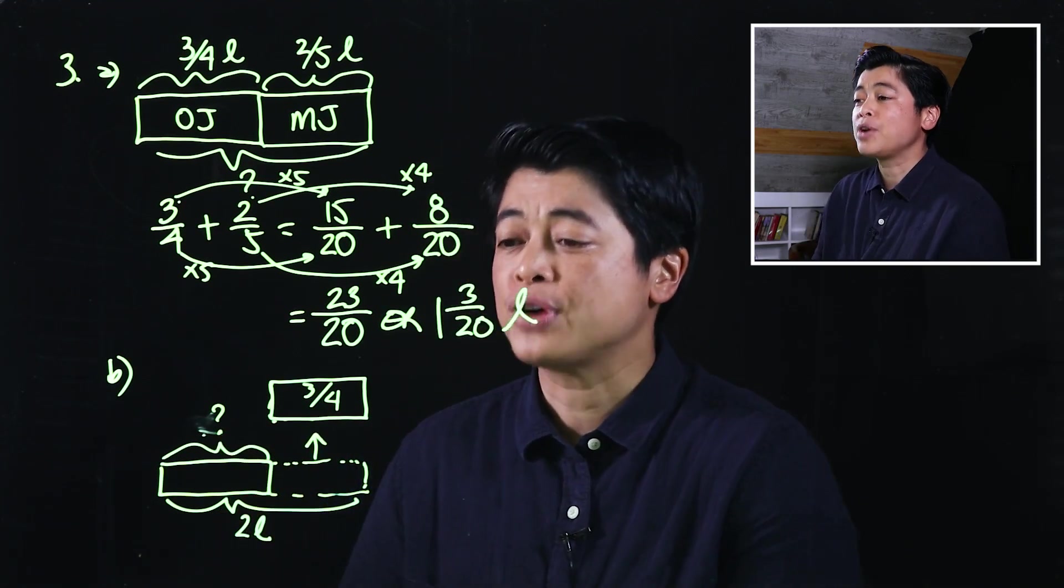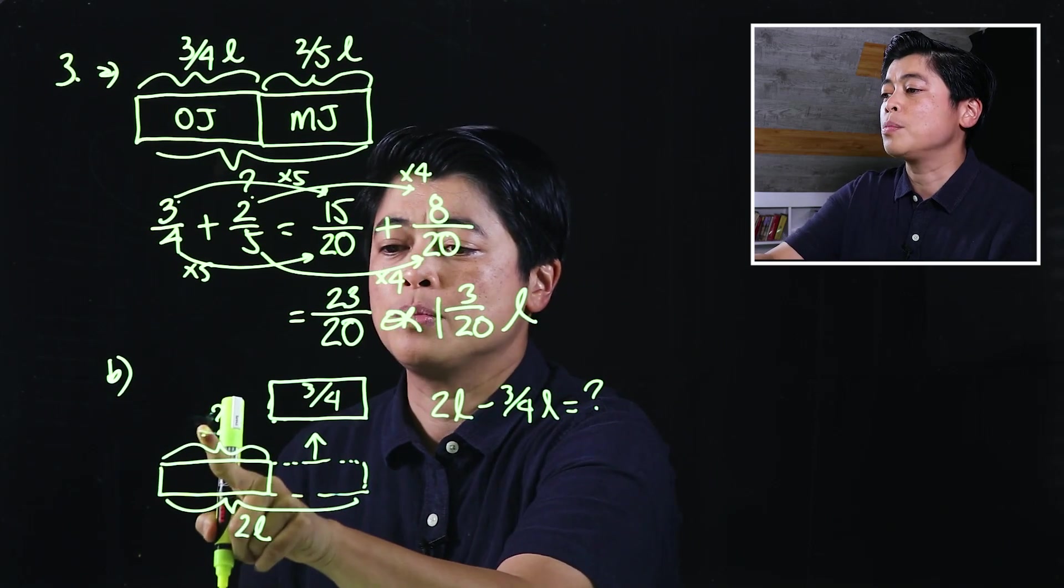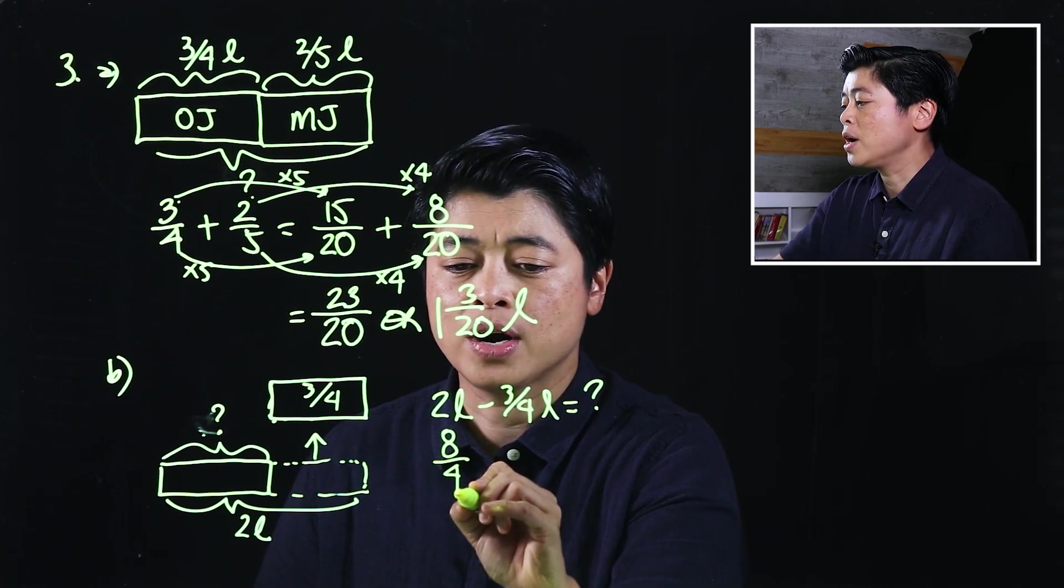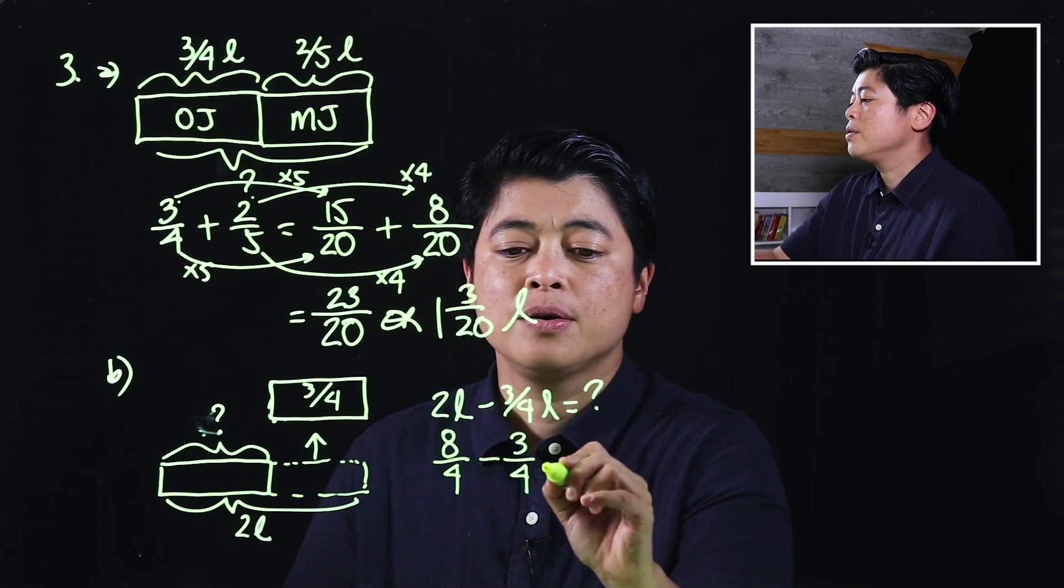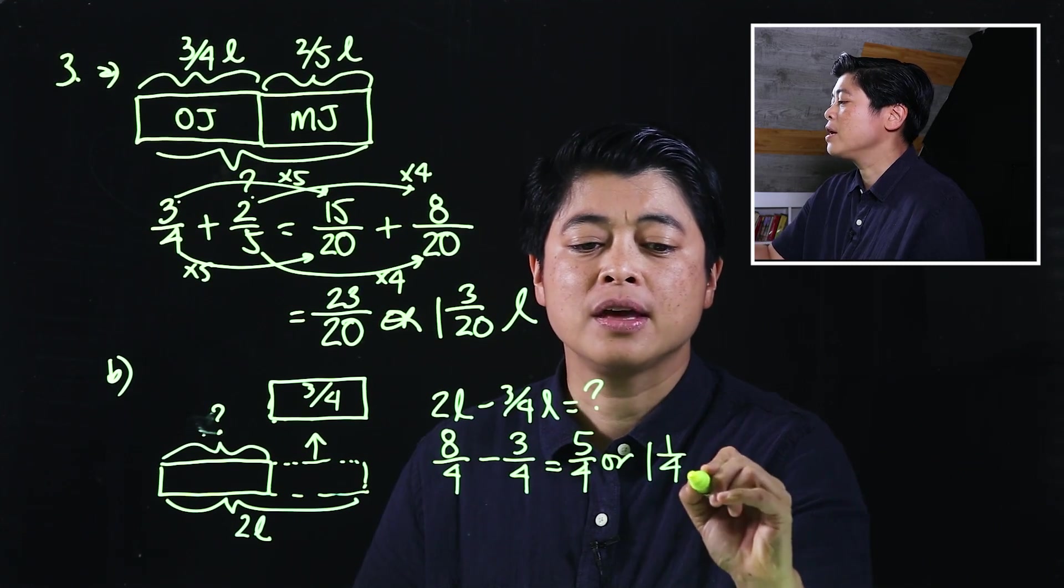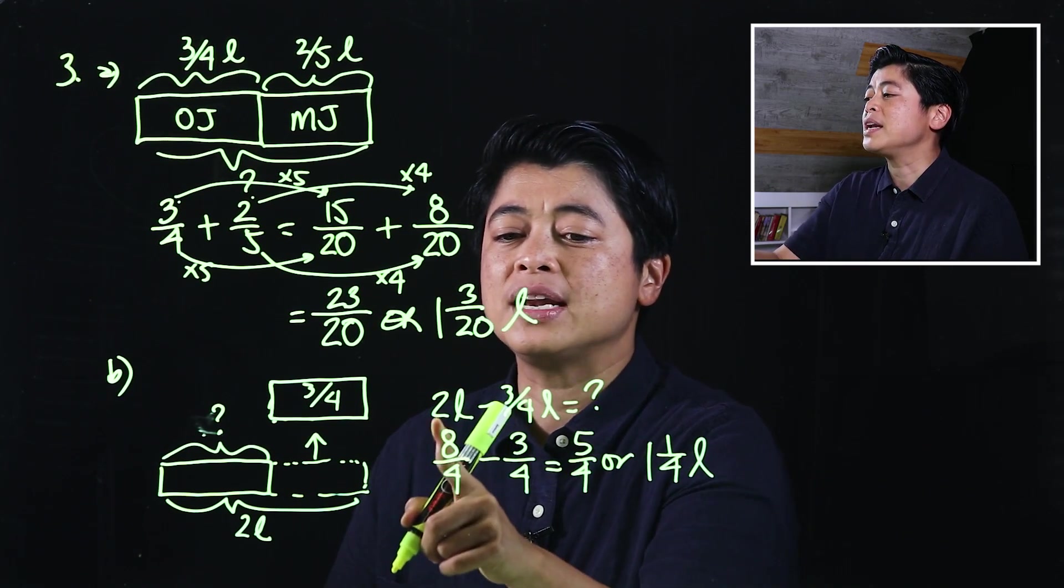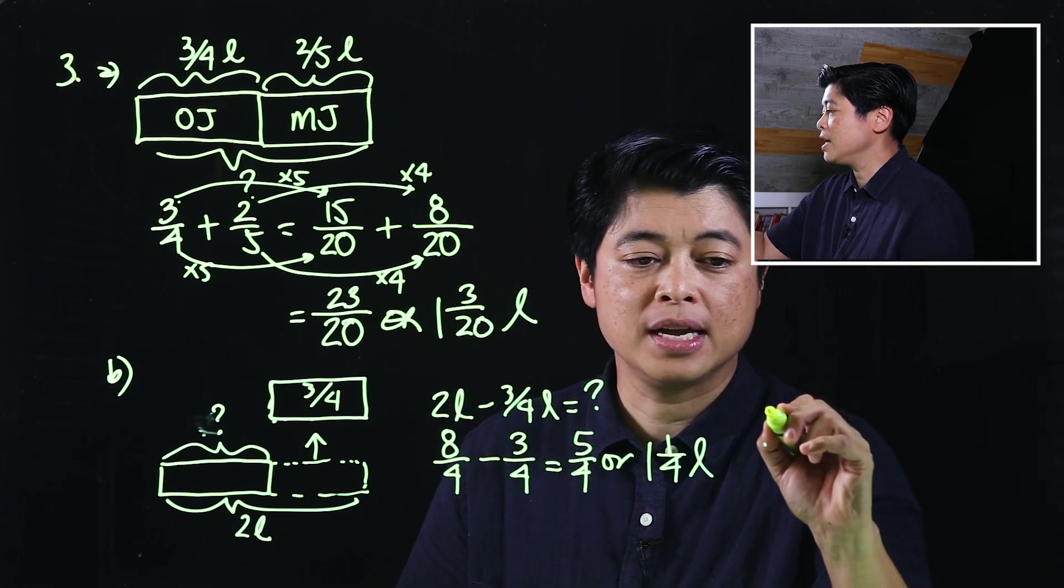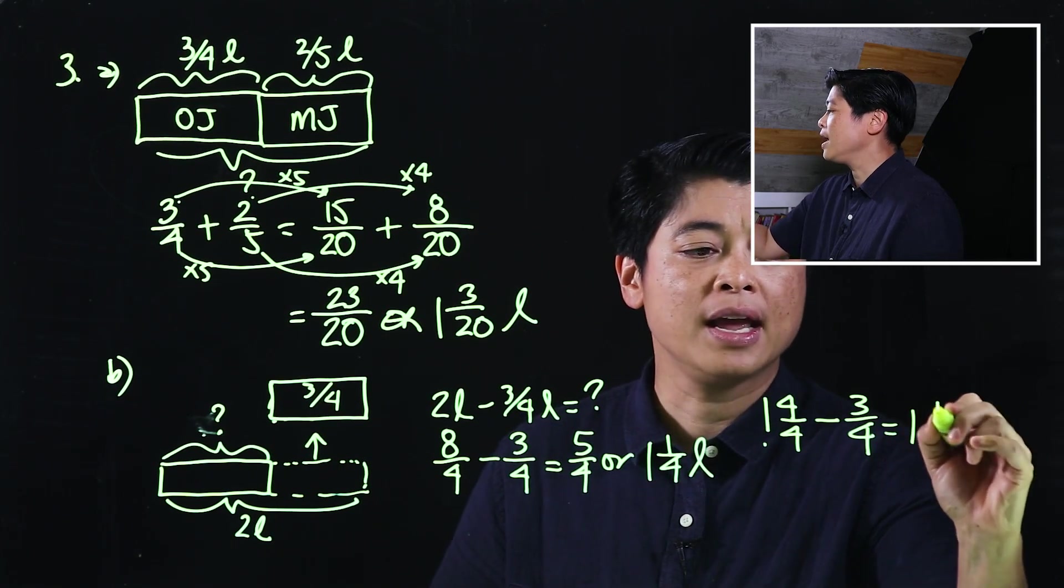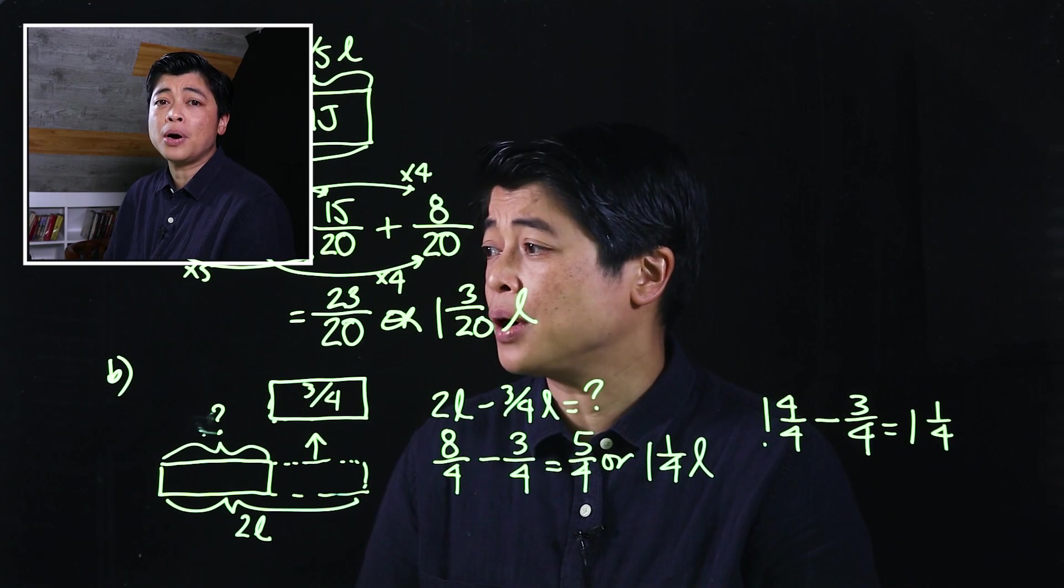So which means since a part is missing, then that means that will be a subtraction problem. So two liters minus three-fourths of a liter is equal to our question mark. When we do this, again, this is technically 8 over 4 minus 3 over 4, which makes it 5 over 4, which makes it 1 and 1/4 liters. We could also make it so that it's 2. I'll put it here: 2 is 1 and 4 over 4 minus 3/4, which means that's also 1 and 1/4. Either way we get the same answer.